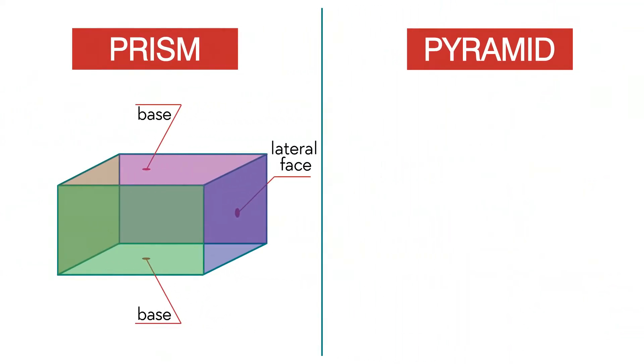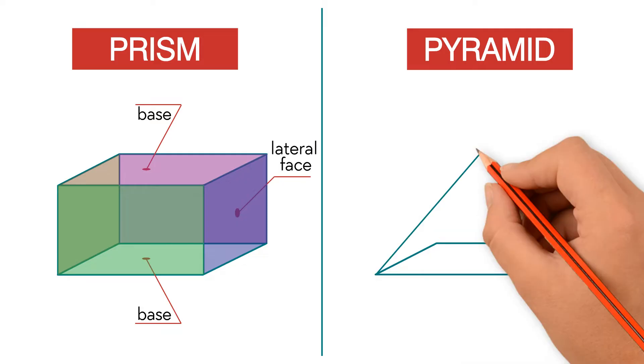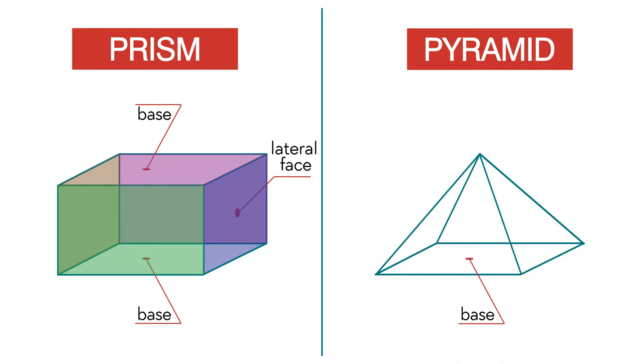Now let's take a look at the pyramid. A pyramid is a polyhedron with one polygon base. The lateral faces of a pyramid are triangles that meet at a vertex. This pyramid has four lateral faces.